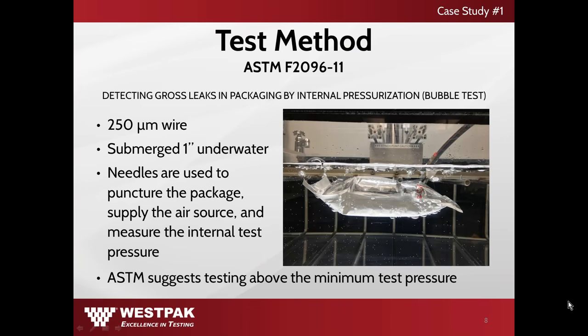In order to ensure sterile integrity, gross leak detection outlined in ASTM standard F2096 will indicate any comparable factors of the sterile barrier system. By taking a 250 micrometer wire, a control sample is punctured and submerged one inch under water. Needles are used to puncture the package, supply the air source to inflate the package, and measure the internal test pressure. Once the test pressure indicates the known failure, the remaining pouches will be tested 0.1 psi above the known failure test pressure.